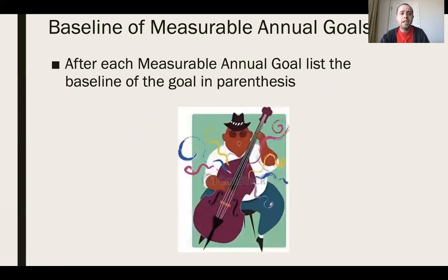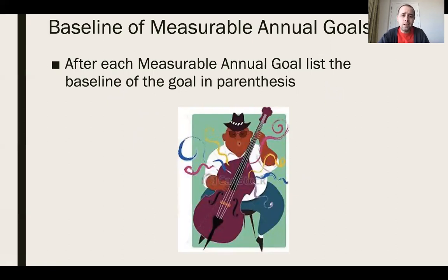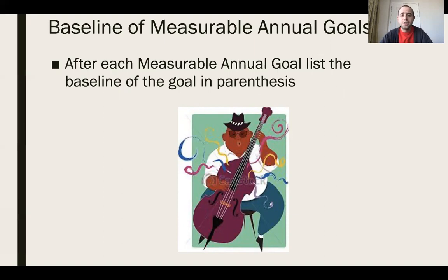When it comes to baselines in measurable annual goals, every goal should have that baseline listed in parentheses in the goal section. We always have the baseline in the actual present levels, but as a best practice, we also want to see it referenced in the goal section as well.